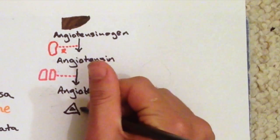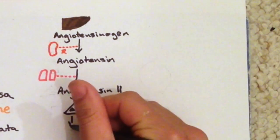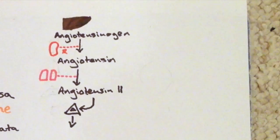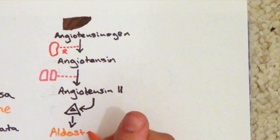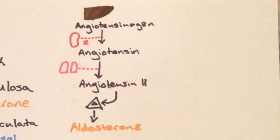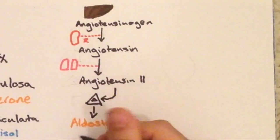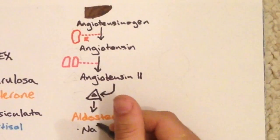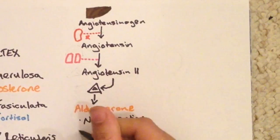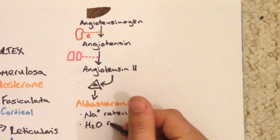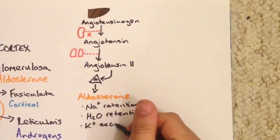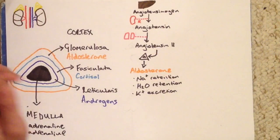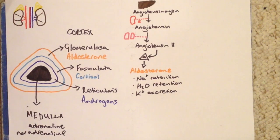Angiotensin-2 also stimulates the production of aldosterone from the adrenal cortex. Aldosterone has a number of different roles, but its main role is in the retention of sodium and water from the renal tubules. It also causes the excretion of potassium, and this helps to maintain our electrolyte and fluid balance.